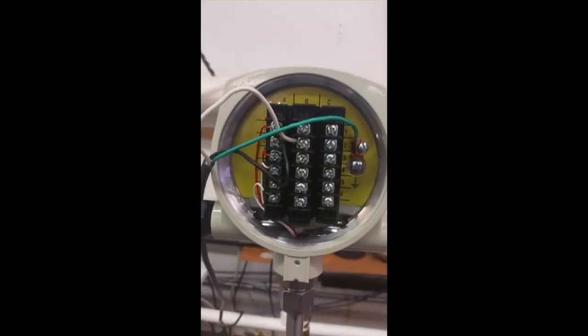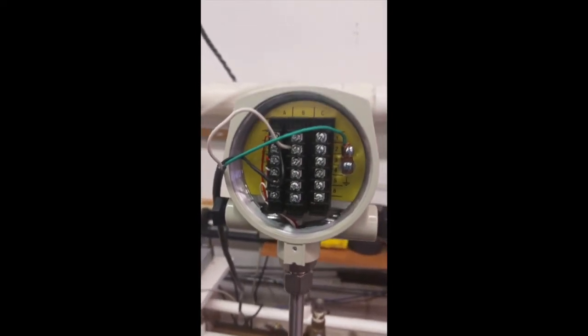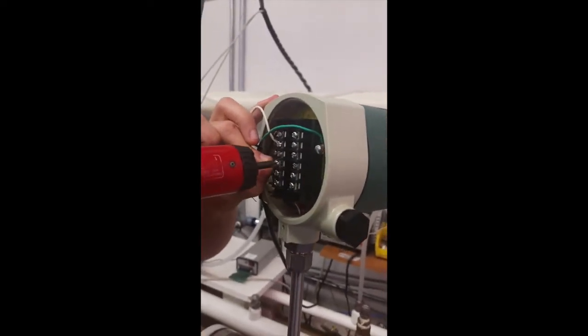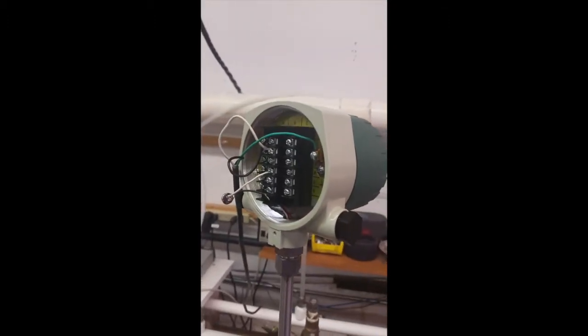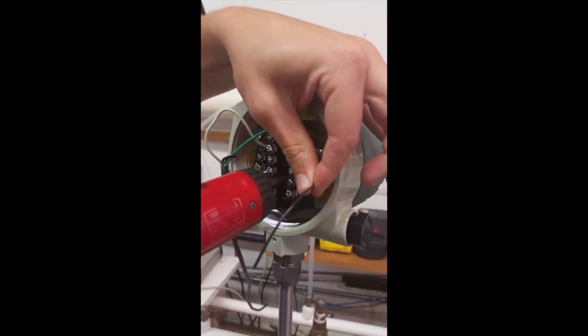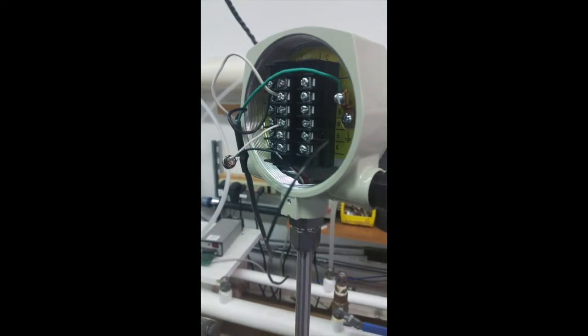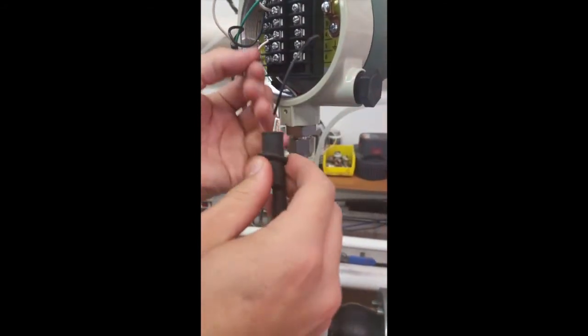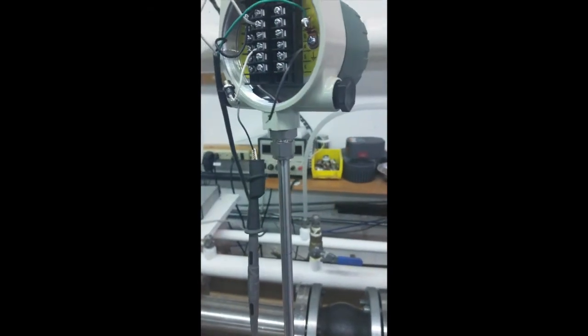Now it's time to connect the 4 to 20 milliamp with external power. So to create the loop, first Kyle's going to connect the positive wire to B4. Next he's going to connect the return wire to B5. This will create the loop for the externally powered 4 to 20. And this is what a proper wiring looks like for that 4 to 20 milliamp externally powered output.